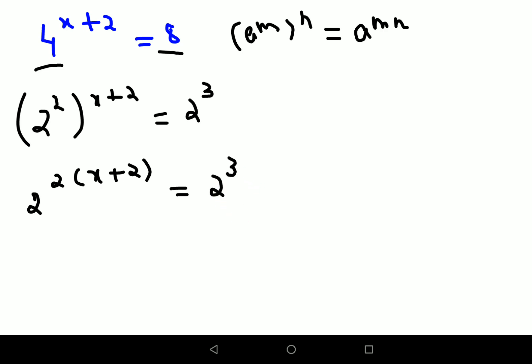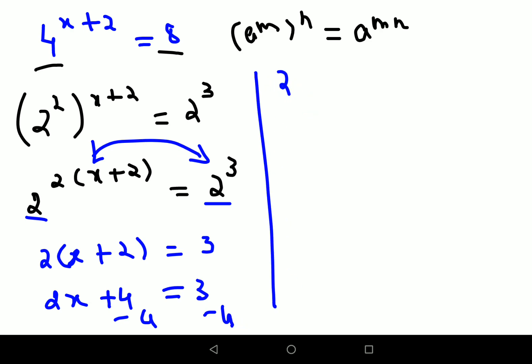Now in indices, if the bases are same you can directly equate the indices. So we have 2 times x plus 2 equals to 3. Opening the brackets, you have 2x plus 4 equals to 3. Subtracting both sides by 4, 2x equals to minus 1. Dividing both sides by 2, x is minus half.